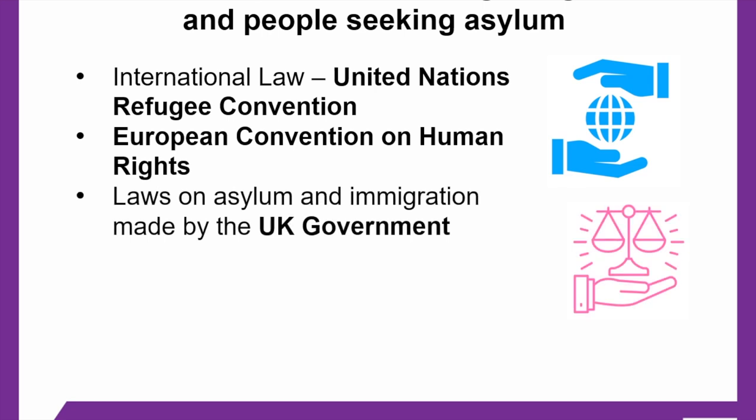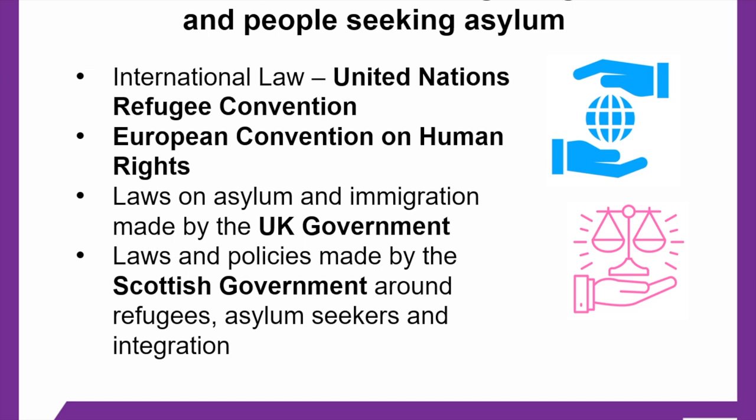We then have UK law and legislation. As many of you will know, laws around immigration and the asylum process are made by the UK government. The Scottish government doesn't have responsibility for immigration or asylum, but they can still make laws and policies around other aspects of life which affect refugees and people seeking asylum and their integration. An example of this is the New Scots Refugee Integration Strategy, which I'll talk about in more detail in one of the next slides.